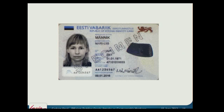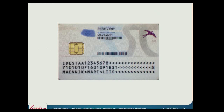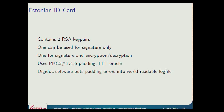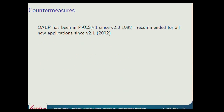There is also an Estonian ID card with a chip on the back that implements RSA PKCS1 v1.5 padding. It has a key usable for both signature and encryption/decryption, which means you can use it to fake signatures.